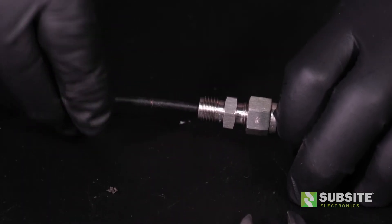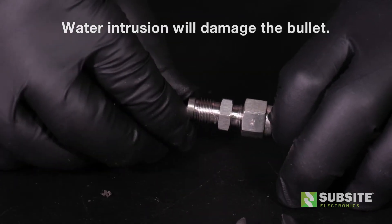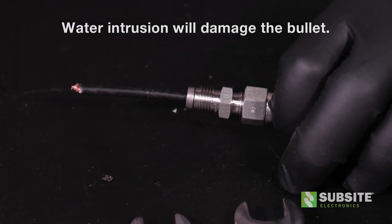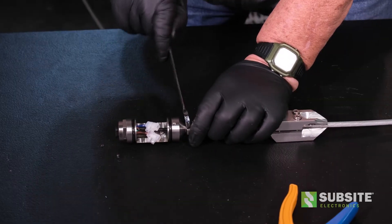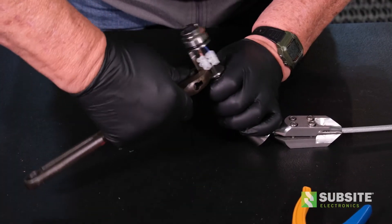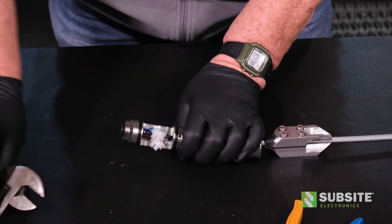To avoid water intrusion, install the washer and O-rings to the end of the cable. Reassemble the bullet and the ferrule body. Use a 1/2 inch wrench to hold the ferrule body while fully tightening the bullet using the adjustable wrench.